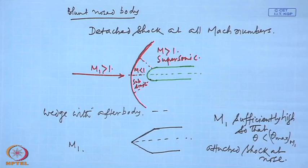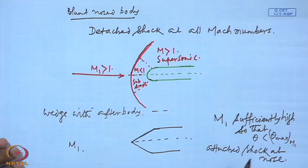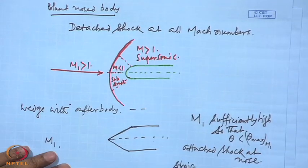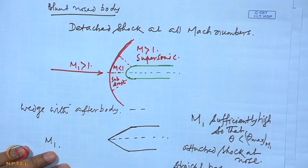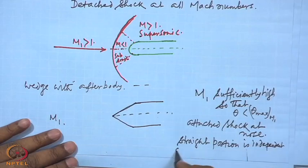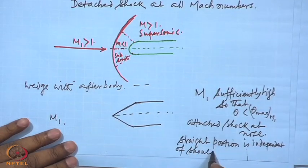The shock angle increases as M1 decreases. At a certain reduced Mach number, the flow after the shock becomes subsonic. As M1 is reduced, there is still an attached shock at the nose and the straight portion remains independent of the shoulder and after-body.